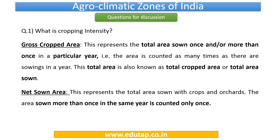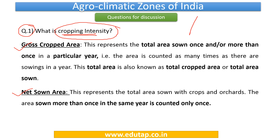Now let us start with question number 1: what is meant by cropping intensity? Before we understand this term, let us first understand what is meant by gross cropped area and net sown area. Once we understand these two terms, it becomes easier to understand cropping intensity. Let us take an example of a village where there are a few patches of land, each patch being 5 hectares in size.